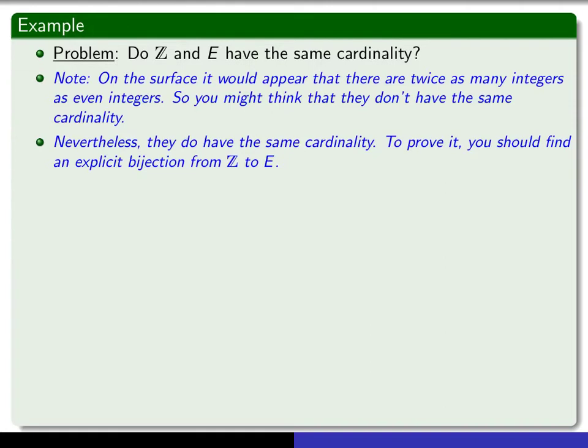So, can you think of a function that maps Z into E that has a chance of being a bijection? Well, the answer is if you map each x in the integers to 2x, that seems like it ought to be a bijection. So, why don't you put your video on pause and see if you can prove that the function from x to 2x is a bijection. In other words, write up a formal proof that there is a bijection from Z to E. When you come back, we can compare our solutions.